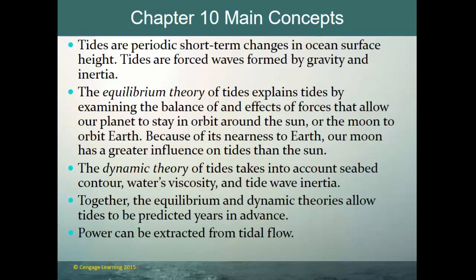Tides are essentially short-term changes in ocean surface height. The equilibrium theory of tides explains tides by examining the balance of forces that allow our planet to stay in orbit around the sun, or the moon to orbit the earth. Because of the nearness to earth, our moon has a greater influence on our tides than the sun. The equilibrium theory looks at the gravitational pull of the sun and moon, while the dynamic theory also takes into account seabed contour, water viscosity, and inertia. Together, these theories allow tides to be predicted not only for tomorrow, but years in advance.